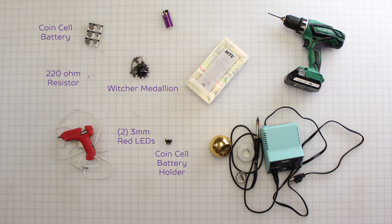You'll also need a coin cell battery holder, some heat shrink tubing, a hot glue gun, a lighter, a drill with a 9/64 size drill bit, and some soldering tools.